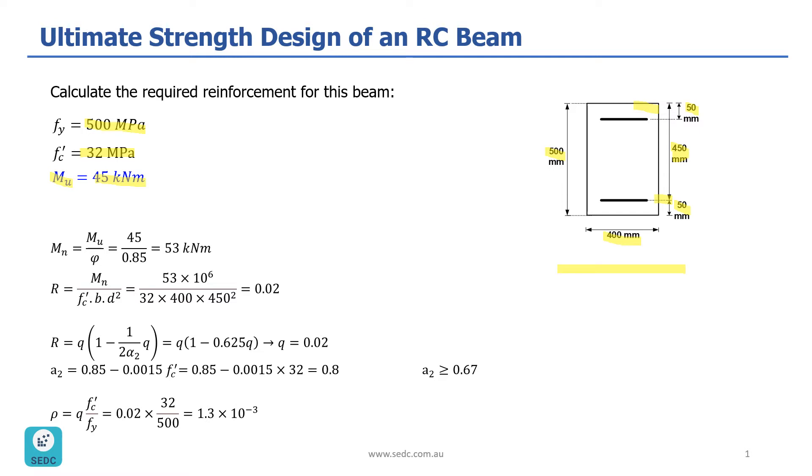Based on the steps that we had before, the first step was to calculate Mn, which is equal to Mu divided by phi as 0.85. So, Mn is going to be 53 kilonewton meter.